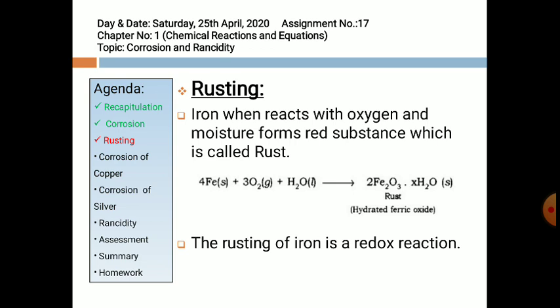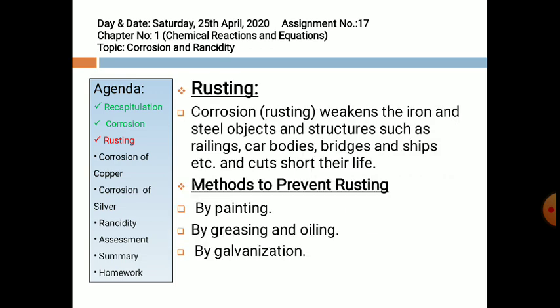The rusting of iron is a redox reaction. Corrosion, that is rusting, weakens iron and steel objects and structures such as railings, car bodies, bridges, and ships, and cuts short their life. You can prevent rusting by painting the surface, by applying grease or oil on the surface, or by galvanization.